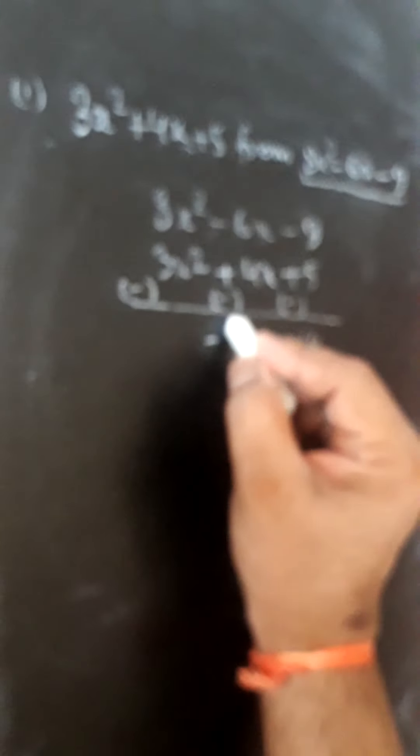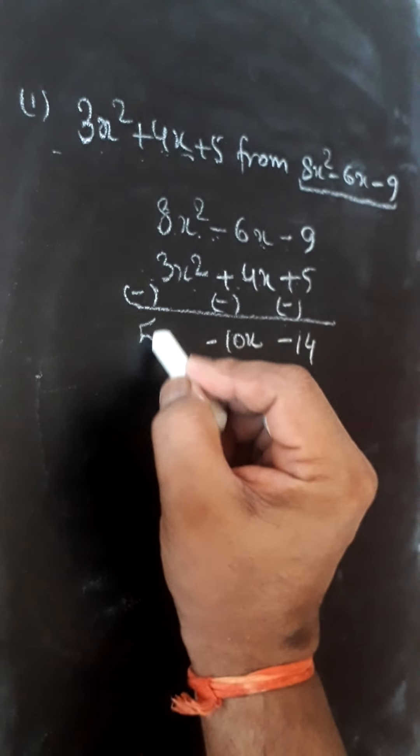We will solve according to sign. Minus 6x minus 4x will become minus 10x. 8x² minus 3x² we will get 5x².